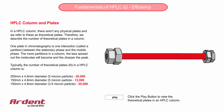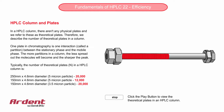One theoretical plate describes one exchange, which is referred to as one partition of a component between the stationary and mobile phases. This is just like one equilibration of the vapor and liquid in the distillation column.